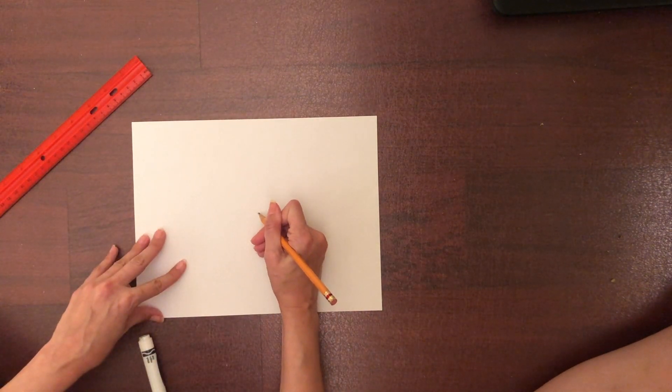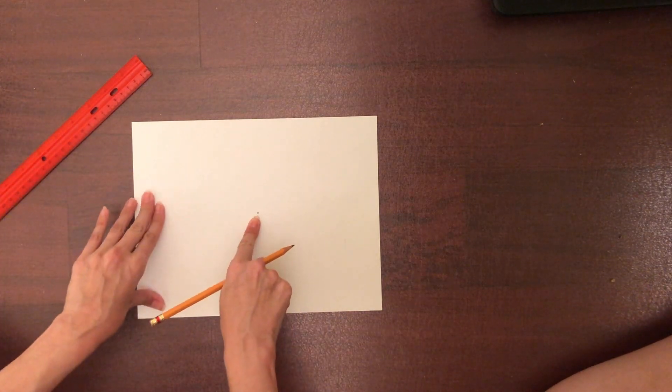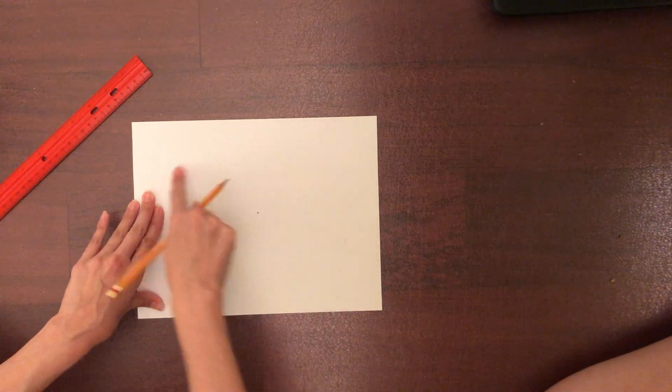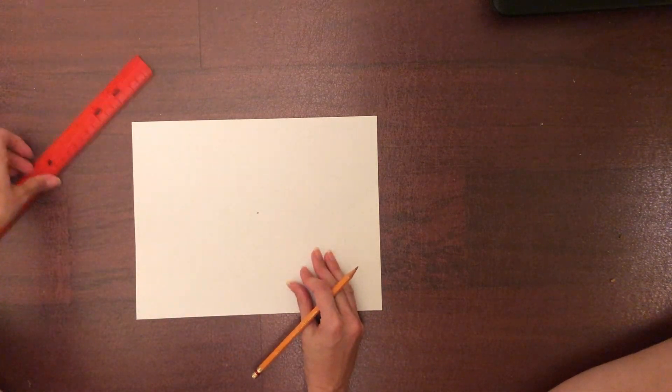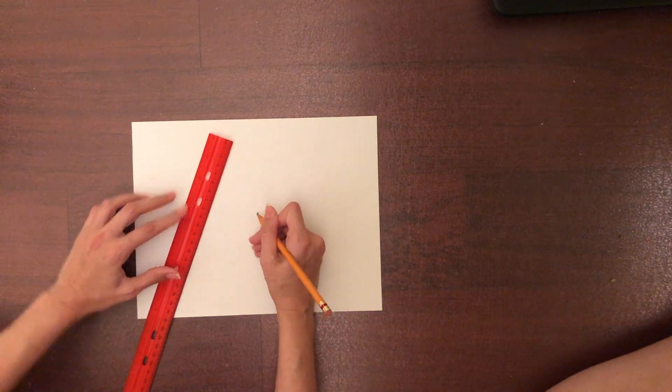So start with a dot in the middle of your page and with your ruler you're going to make lines coming from the center all the way out, and we're going to make them somewhat evenly spread. You need to make enough lines so that there's an even amount of spaces.